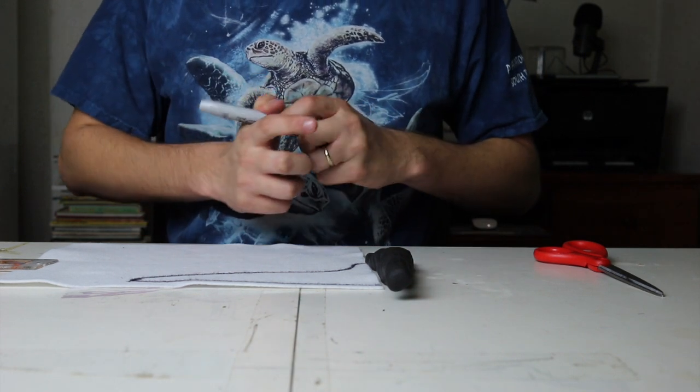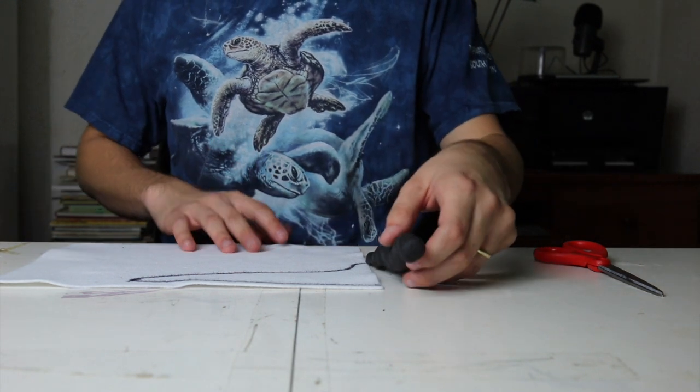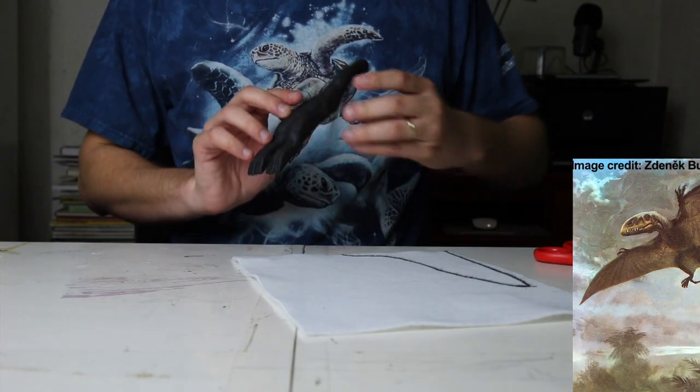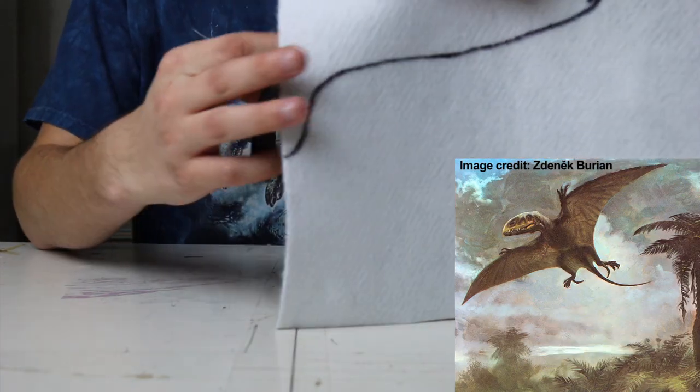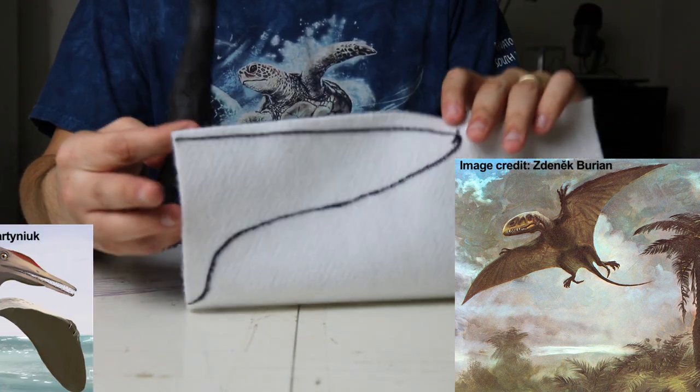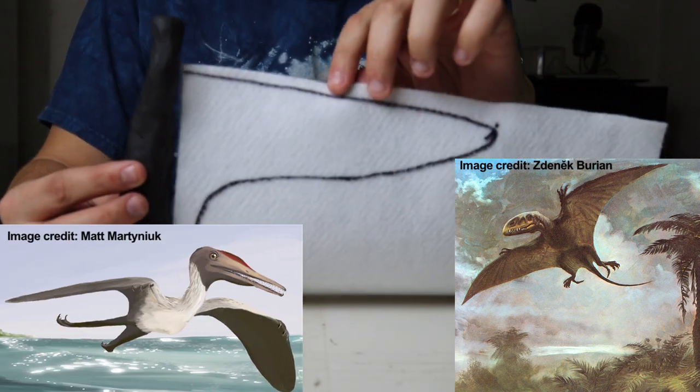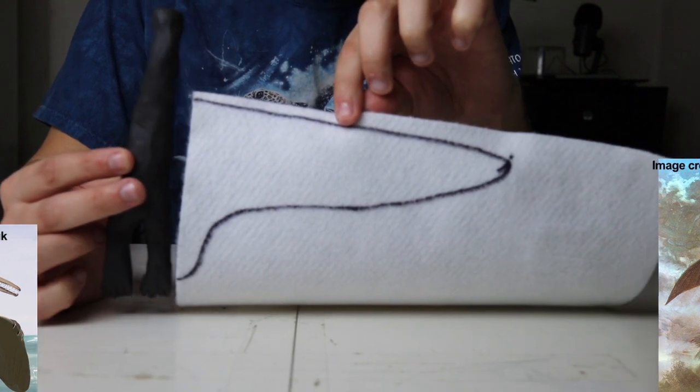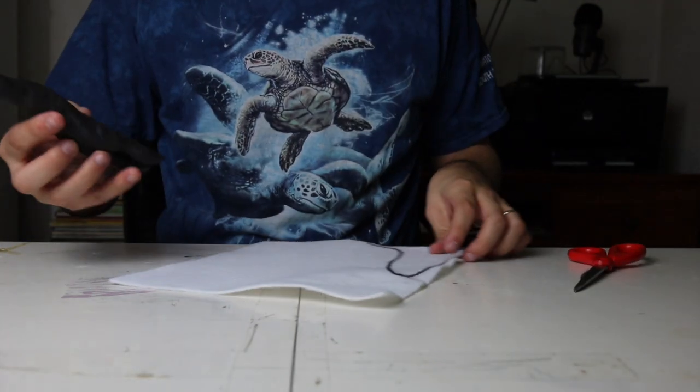An easy mistake to make based off of some older depictions is making the wingtips pointed so they're more triangular, but that's actually not accurate. It would make more sense aerodynamically to have the wingtips be more rounded rather than pointed, so that's what I'm doing here when tracing it.